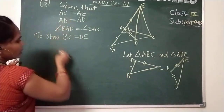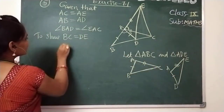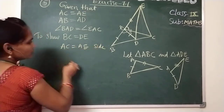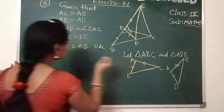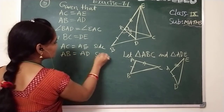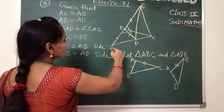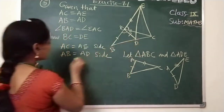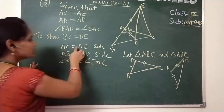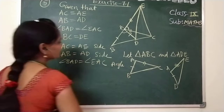We should show these two triangles are congruent. Already, AC is equal to AE — this is a side. AB is equal to AD — this is also a side. And angle BAD is equal to angle EAC — this information is already given in the figure.